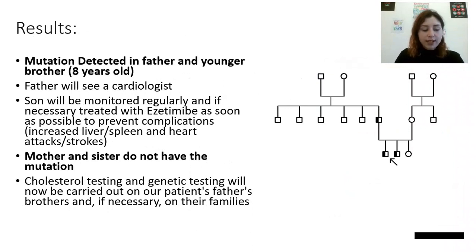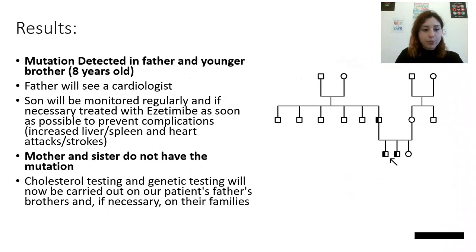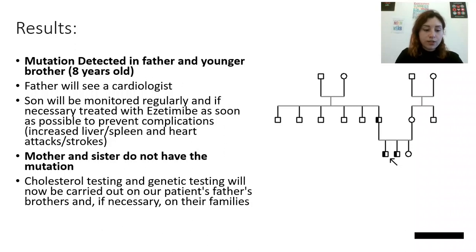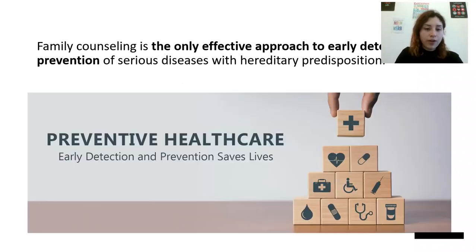With the help of genetic testing, the mutation was also detected in the father and younger brother. The future plan for the father is to visit a cardiologist, to be monitored regularly, and if necessary, to be treated with ezetimibe. Cholesterol and genetic testing will now also be carried out for the patient's father's brothers and, if necessary, their families.